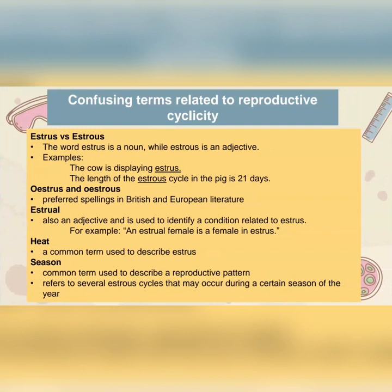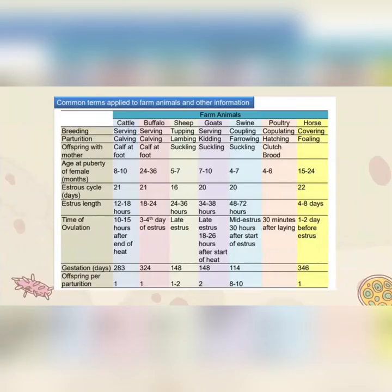Heat is a common term used to describe estrus. We also have the term season — a common term used to describe a reproductive pattern, which usually refers to several estrous cycles that may occur during a certain season of the year. This table summarizes the common terms applied to farm animals and other information.